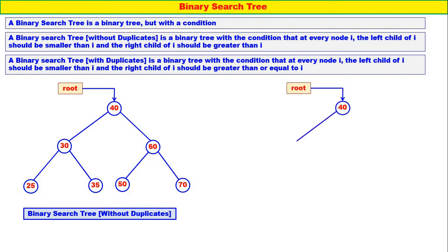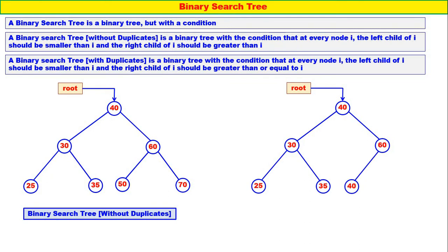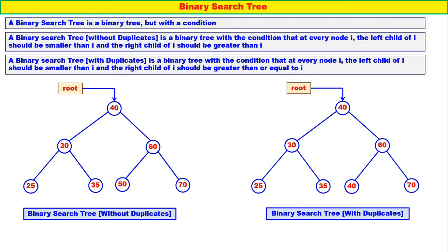Now this binary search tree: 40 is the root. 30 — it is less than 40. 25 — it is less than 30. 35 to the right of 30 — 35 is greater than 30 but less than 40. 60 is greater than 40. Now 40 is less than 60, but 40 is equal to the root 40, and it is inserted to the right. And 70. So this is a binary search tree with duplicates. We have considered two binary search trees — one without duplicates and the other with duplicates.